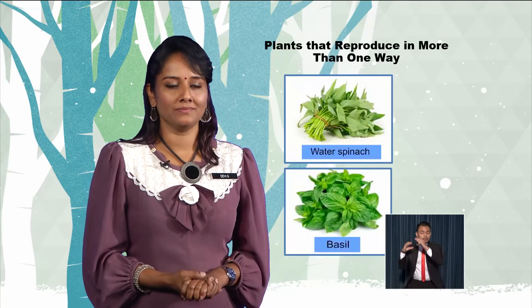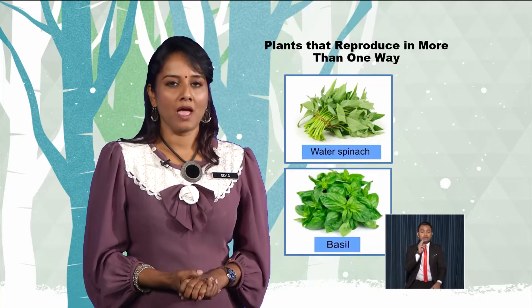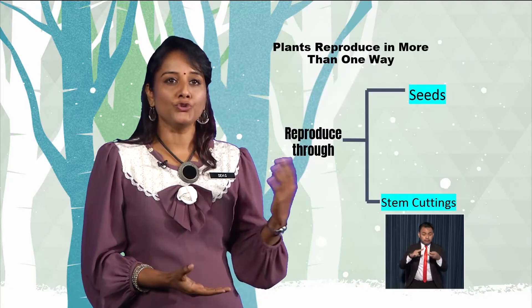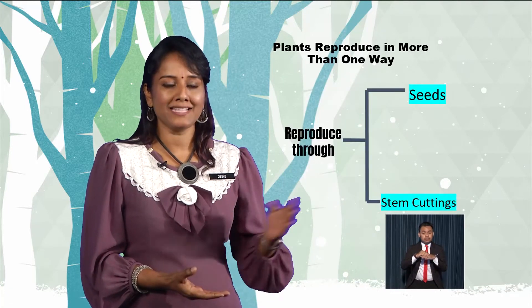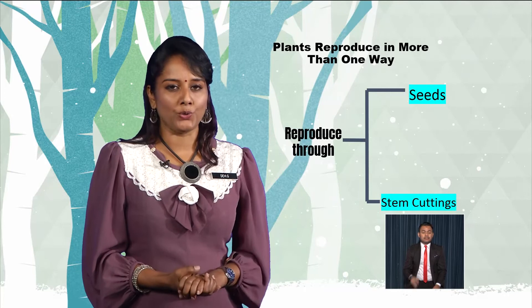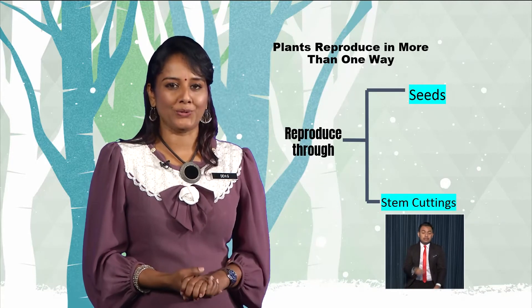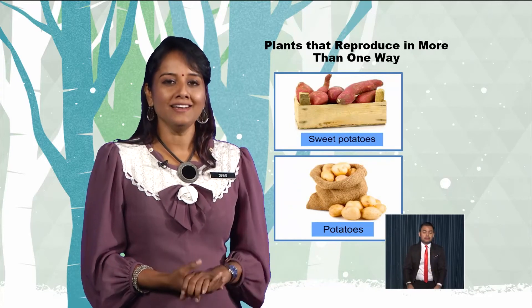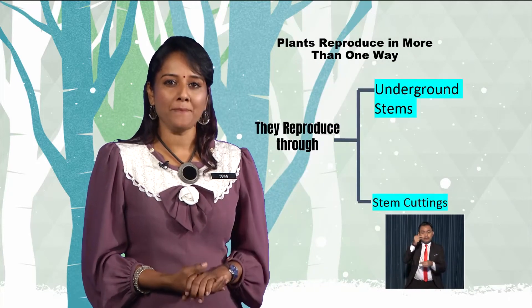Do you know there are plants that are able to reproduce in more than one way? For example, water spinach and basil can reproduce through seeds and stem cuttings. Sweet potatoes and potatoes can also reproduce through underground stems and stem cuttings.